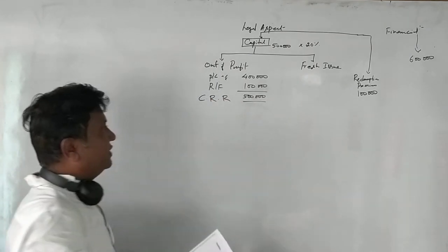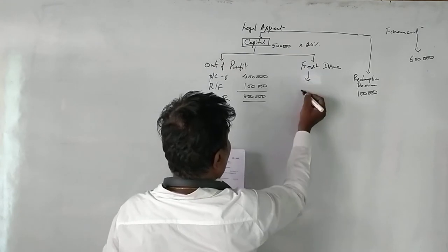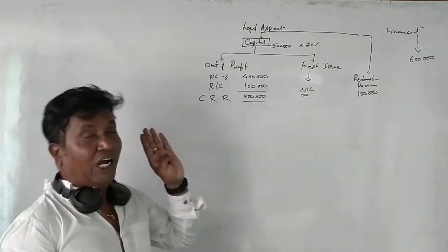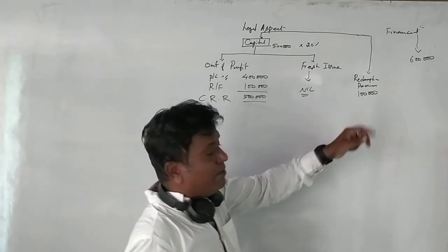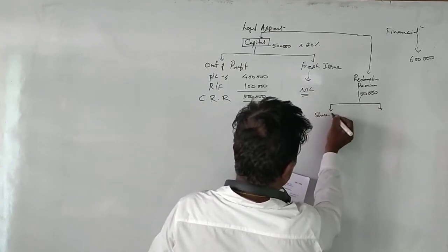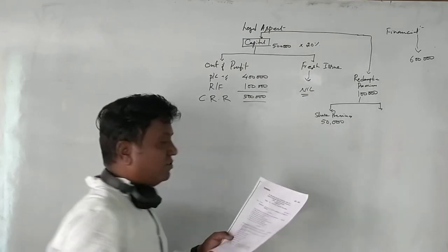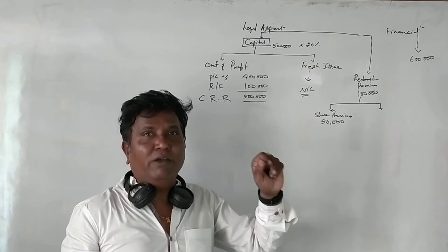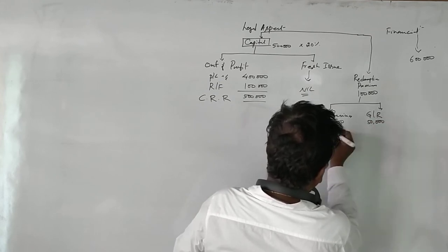This amount we can show as a transfer to the CRR account. There is no fresh issue here as it is not given in the question, so there is no need to go for fresh issue because divisible profits are plenty available. For the redemption premium, the balance sheet shows Share Premium (Security Premium) of 50,000 rupees. We have to pay 1 lakh rupees total, so the remaining 50,000 rupees can be taken from General Reserve.